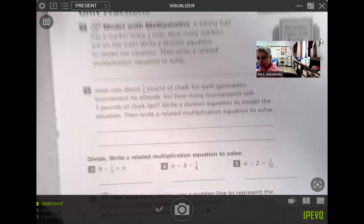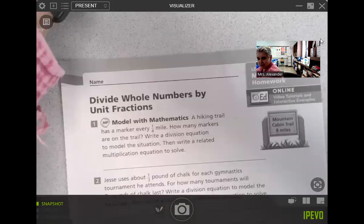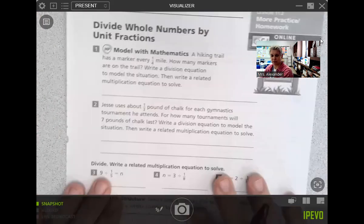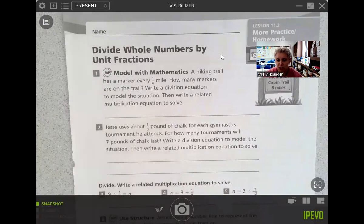So let's see. How is this looking? Let's leave it right there. A hiking trail has a marker every one-fourth of a mile. How many markers are on the trail? Write a division equation to model the situation, then write a related multiplication equation.